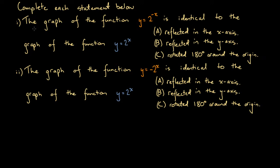Here we've got a couple of multiple choice questions. We're asked to complete each statement below. The first one: the graph of the function y equals 2 to the power of negative x is identical to the graph of the function y equals 2 to the x. We have three options: a) reflected in the x-axis, b) reflected in the y-axis, or c) rotated 180 degrees around the origin.